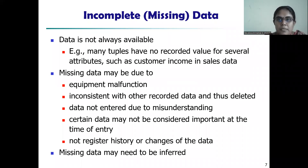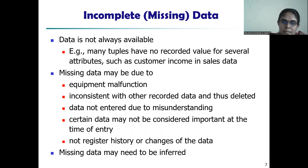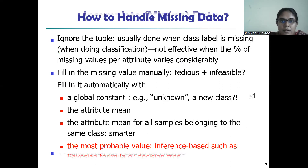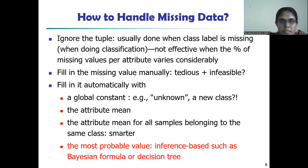This is about dealing with missing data. The data may not be available — many records have no recorded value for several attributes. For example, customer income may be missing in the sales data. This may be due to inconsistencies with other recorded data, an instrument fault, data not entered due to misunderstanding, or changes not being registered. To handle missing data, we can ignore the tuple — we always ignore the tuple when a class label is missing during classification. If the percentage of missing values for any particular attribute varies considerably, we will also ignore the tuple.